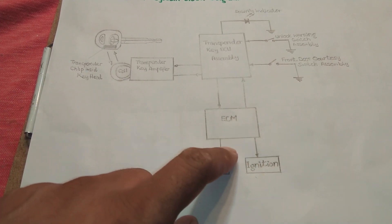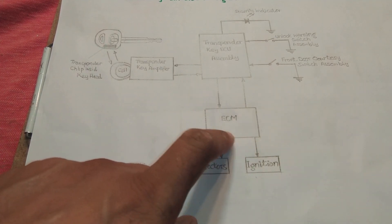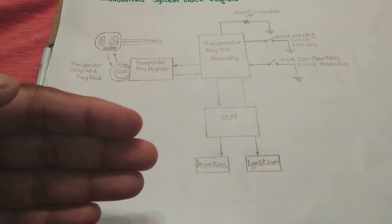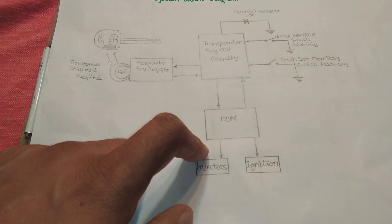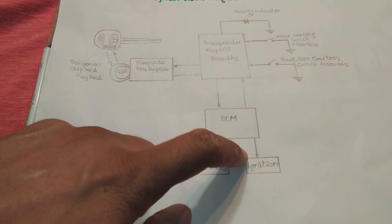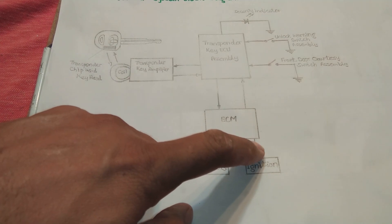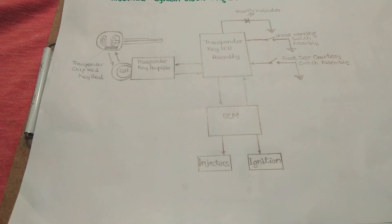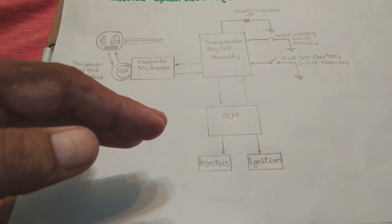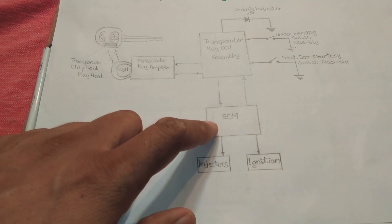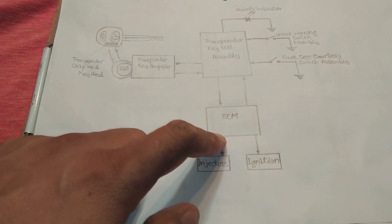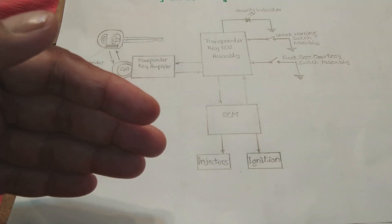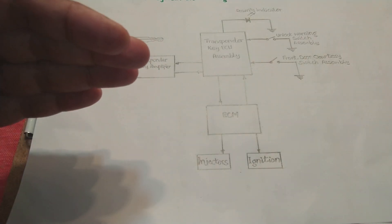If the injector supply or ignition supply is stopped from here, the engine will cease — it will stop, it will immobilize and will not work. This is how the immobilizer functions: it stops pulses to the injectors and in some systems it also stops pulses to the ignition system. If an original key is found by the system, it provides pulses to the injectors and ignition, cancels the immobilizer, and makes the car start.